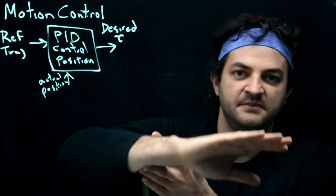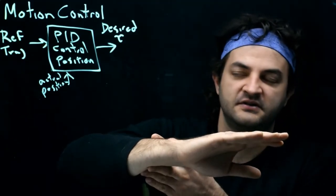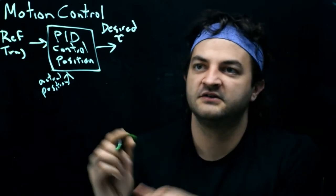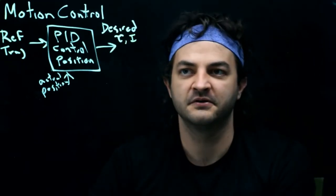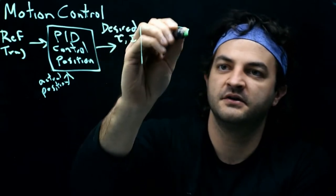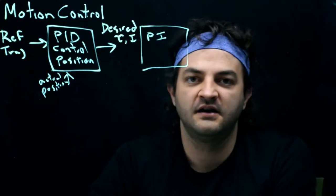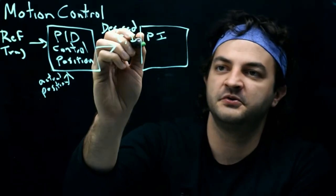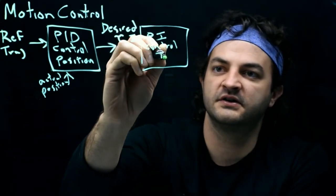The further away I am, probably the more acceleration I need. The acceleration of the motor is tied to the torque, and the torque is tied to the current. So when I say desired torque, I really mean I have a desired current that I want going through the motor. That will go into another PID — in this case probably just PI, because it's a first-order system — a PI control of the current through the motor.